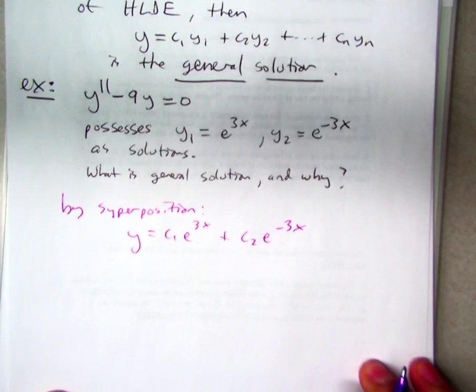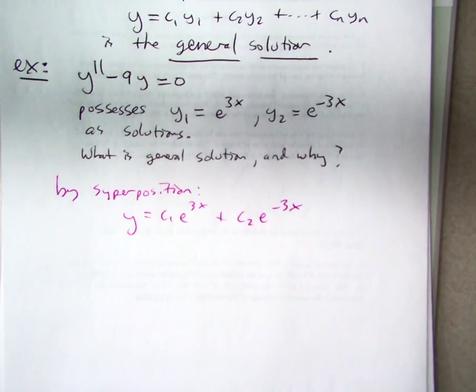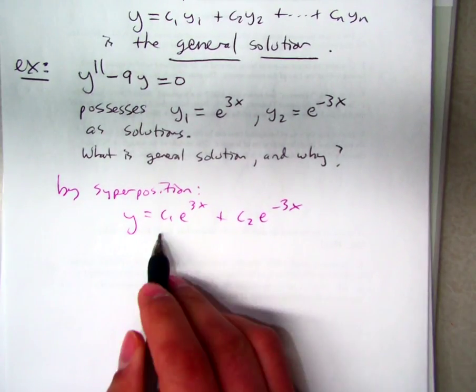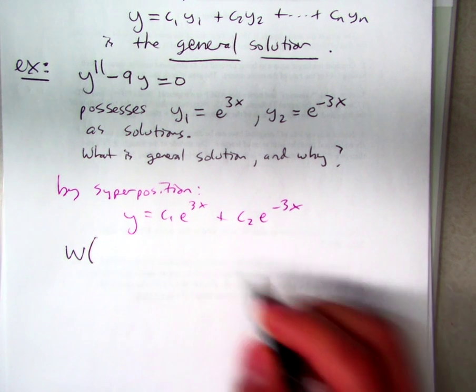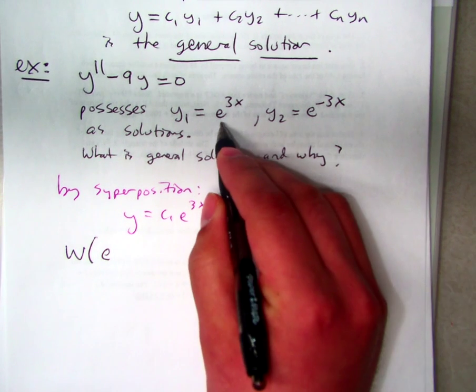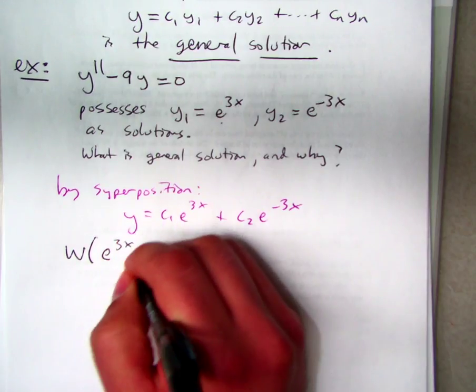And right now, since we're not actually finding them, we just kind of want to lay down the framework. We verify that this is the general solution by computing the Wronskian of the two functions, which are e to the 3x and e to the minus 3x.